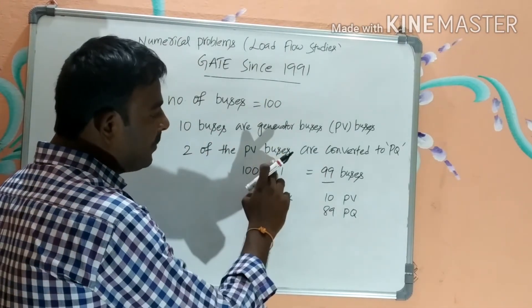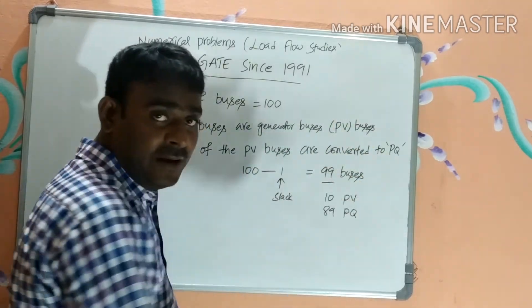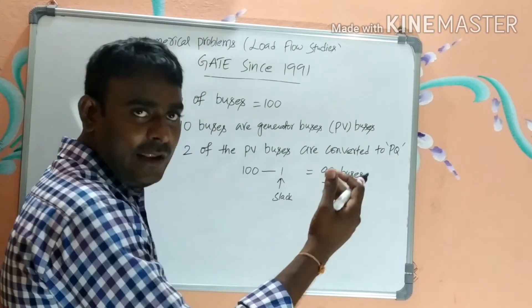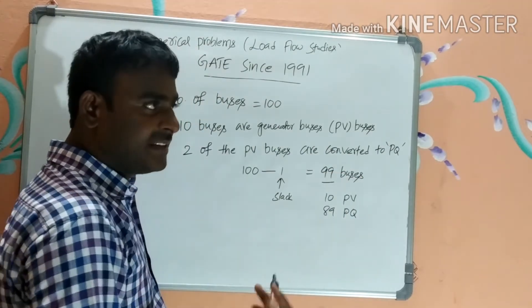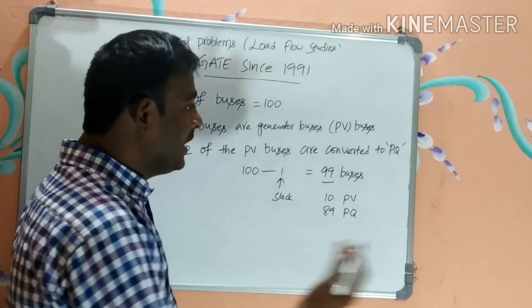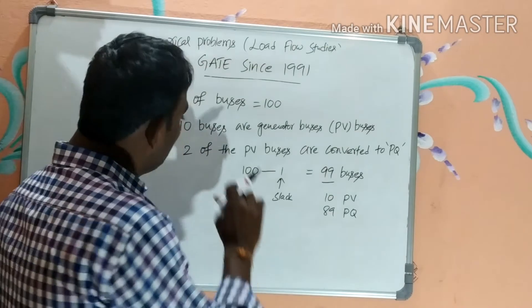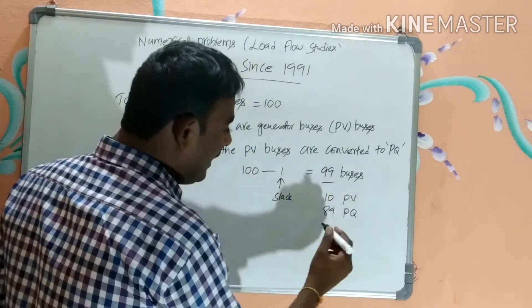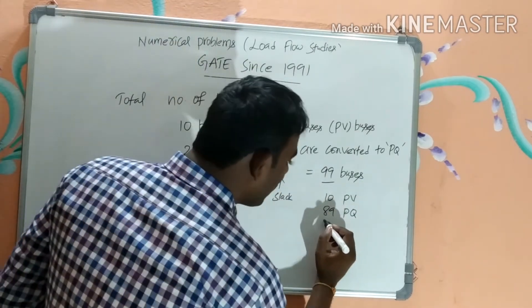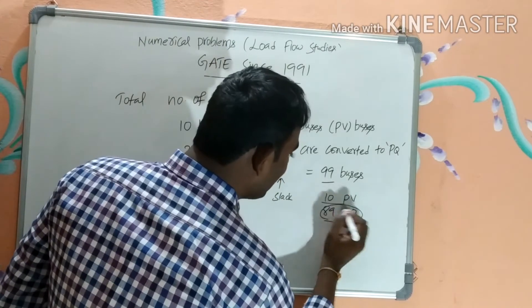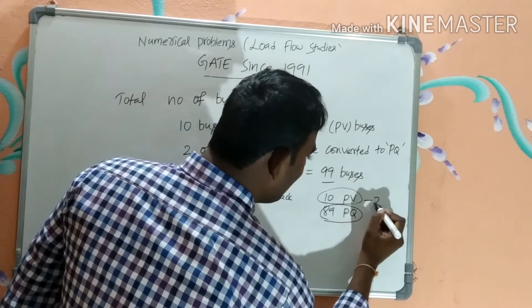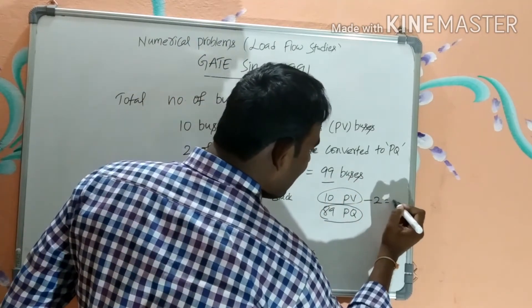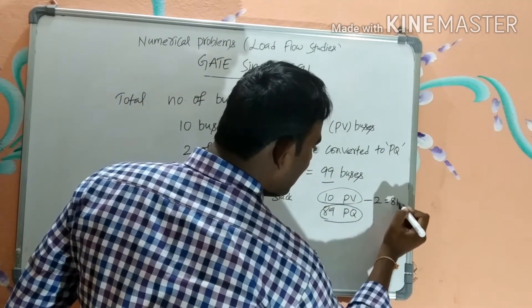It is given that out of the 10 generator buses, 2 PV buses are converted to PQ in a particular iteration. So PV buses reduce to 8, and PQ buses increase to 91.